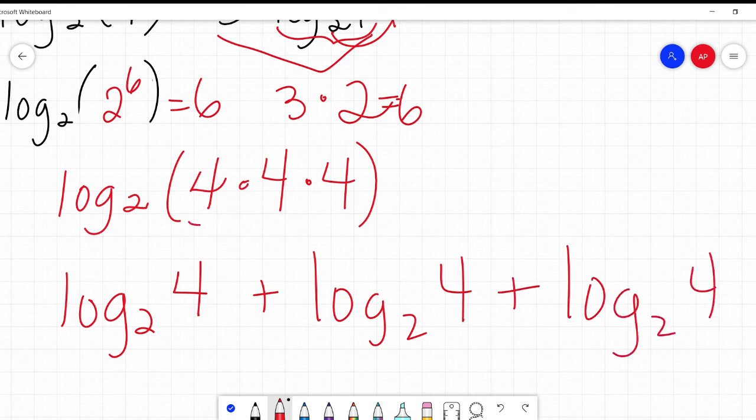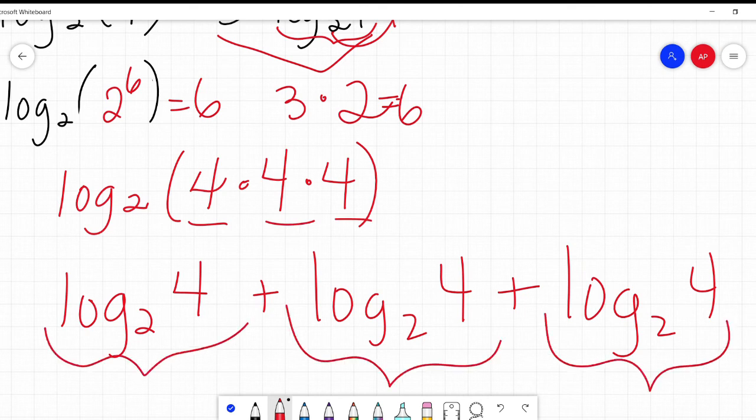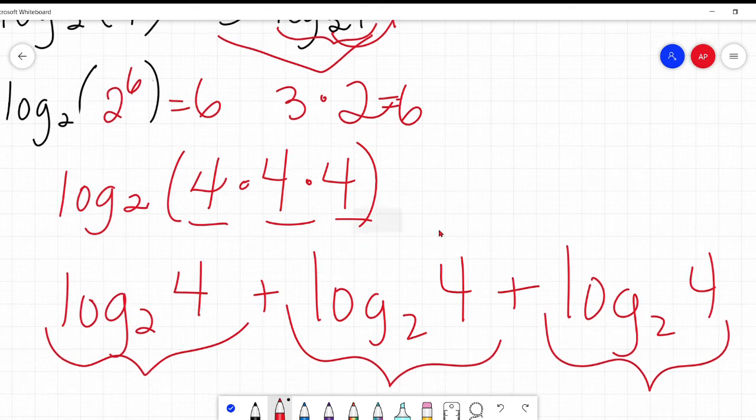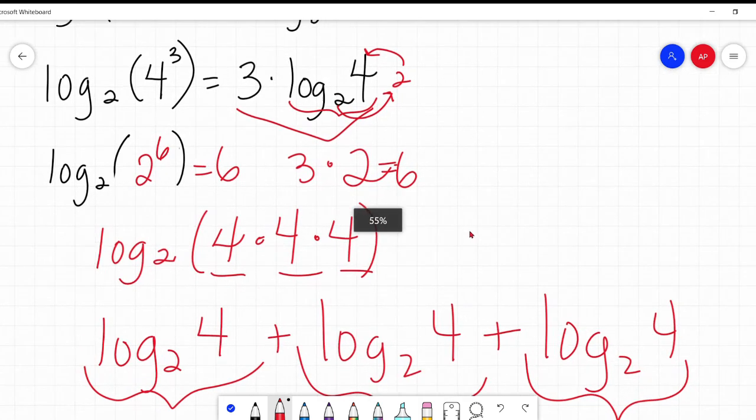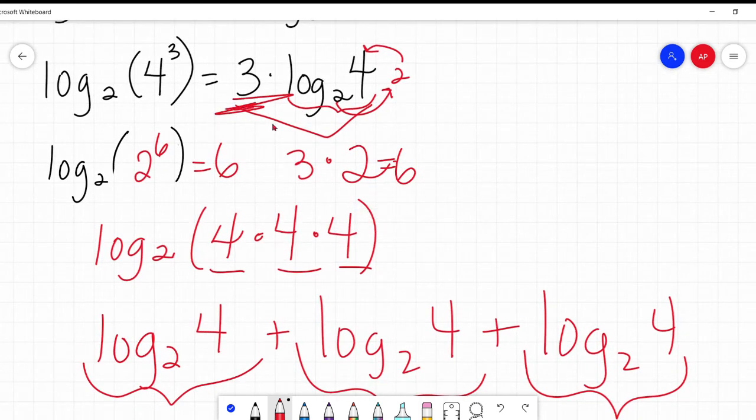Because that's what's happening here. I've got three things multiplied together. So that rule that we learned, our rule 1, says that this should be log base 2 of 4 plus log base 2 of 4 plus log base 2 of 4. Well, I have 4 to the power of 3, and here I've added it three times. So three times log base 2 of 4. And that's what this rule says. Three times log base 2 of 4. It's all coming together.